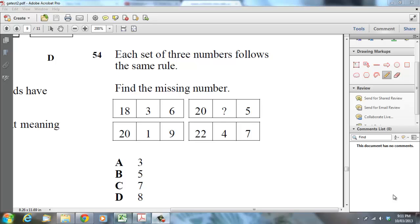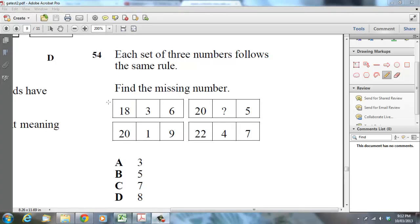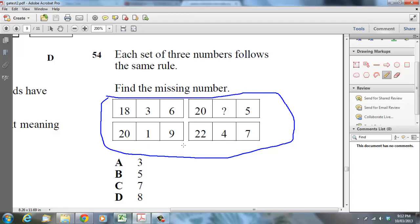So let's go through the question. Each set of three numbers follows the same rule. Find the missing number. The first group of numbers is 18, 3, 6, and the second group is 20, question mark, 5. So the question mark is the missing number that you need to find. The third group of numbers is 20, 1, 9, then 22, 4, 7. So it's this whole section here. The first thing you should be doing is looking at finding out what you're supposed to solve in the exam, which is that.